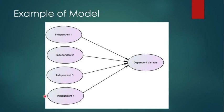When you have a list of independent factors that have an impact on a dependent factor, that is the model where you apply multiple regression.